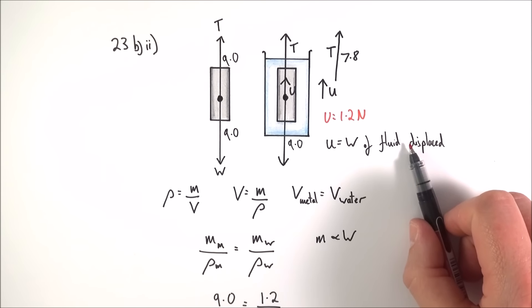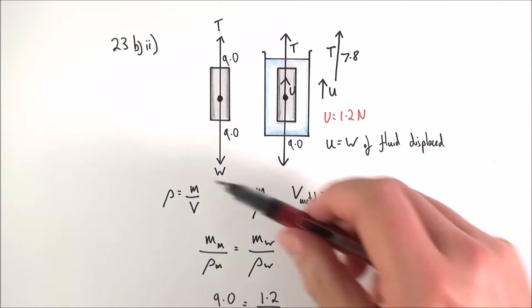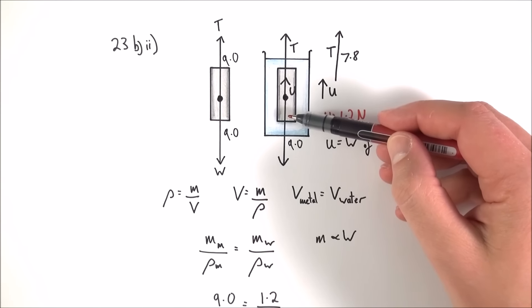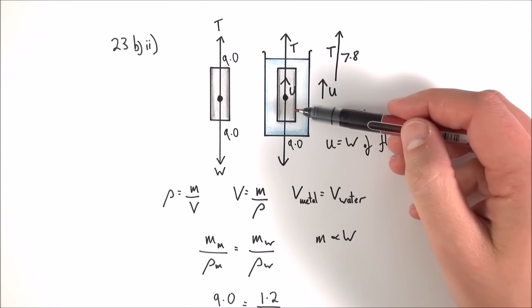And what we know from Archimedes principle is that the upthrust is equal to the weight of the water or fluid displaced. From within that what I then said was that density is equal to mass divided by volume or volume is equal to mass over density.